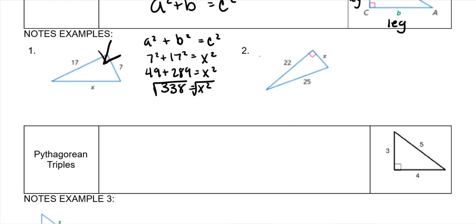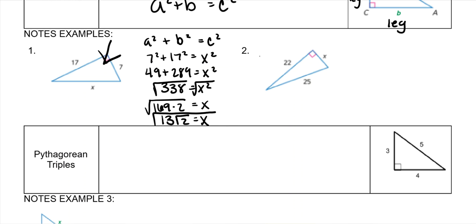Take the square root of both sides. 338 is the same thing as 169 times 2. 169 is 13, so it would be 13 square root of 2. And don't forget in Schoology it would be written as 13 SQRT2.